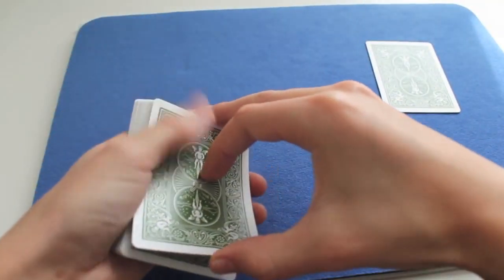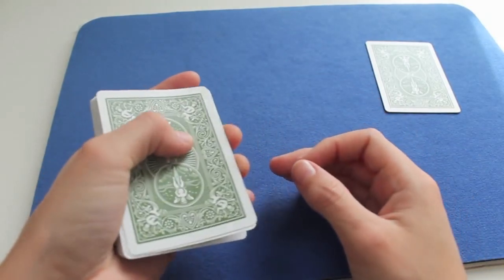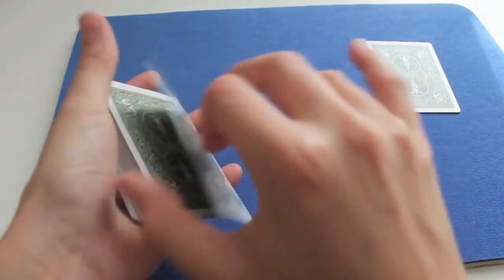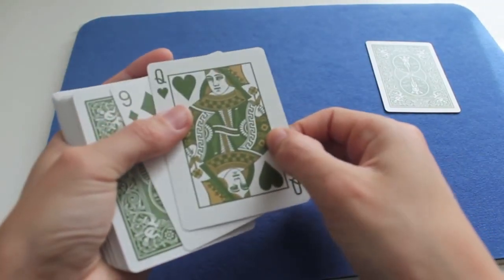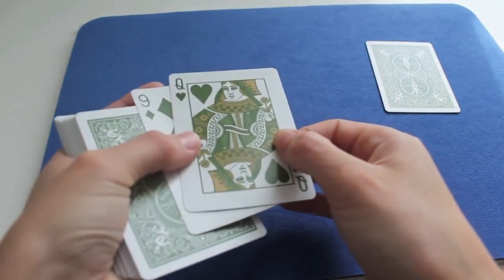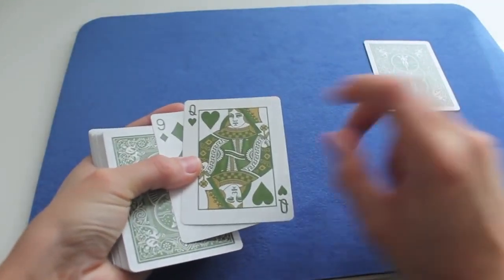You leave it there, and you say, and now I'm going to take the second top card, which is actually the third, because you'll do another double lift, the queen of hearts, and you have the nine of diamonds. You told them that it was there, but it's actually there.